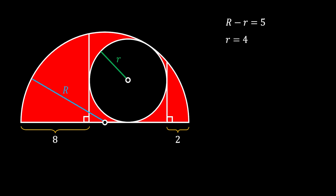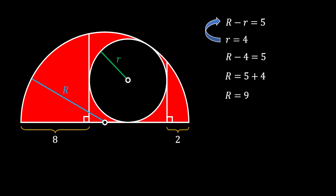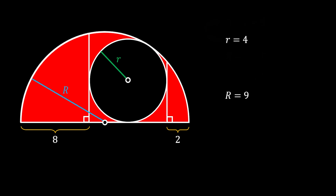Substituting r = 4 back into the equation R − r = 5, we get R − 4 = 5, so R = 9. The radius of the bigger half circle is 9.